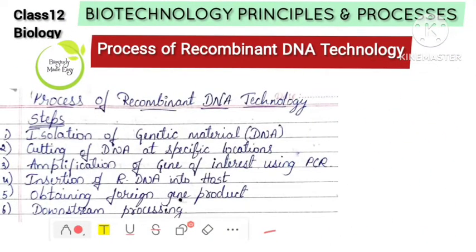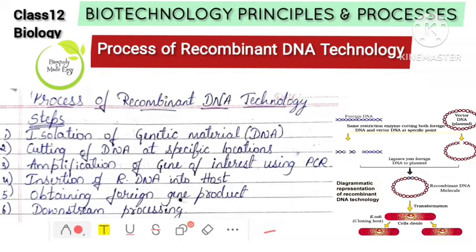For the exam, we will explain the process of recombinant DNA technology. We will talk about the diagram. Let's see the steps. The first step is isolation of DNA or genetic material.